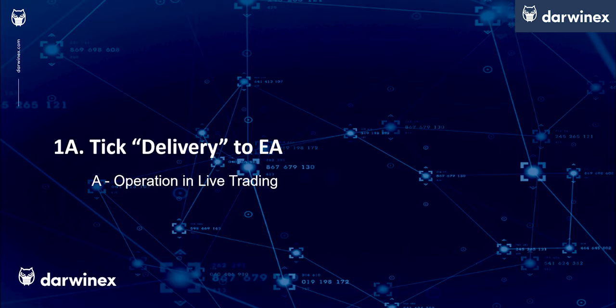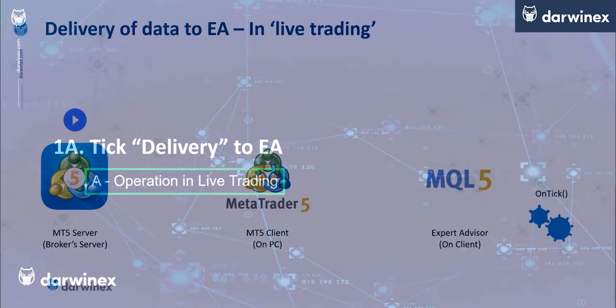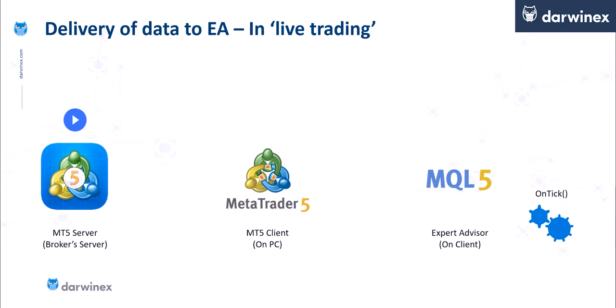So let's look at tick delivery first from the context of live trading, specifically from the perspective of MetaTrader 5. Here the price feed will be delivered from the MT5 server, which is hosted by your broker, and delivered to the MT5 client running on your VM or your own PC. As a tick comes in, it gets delivered to your expert advisor and then processed in the OnTick function, which is all fairly simple.